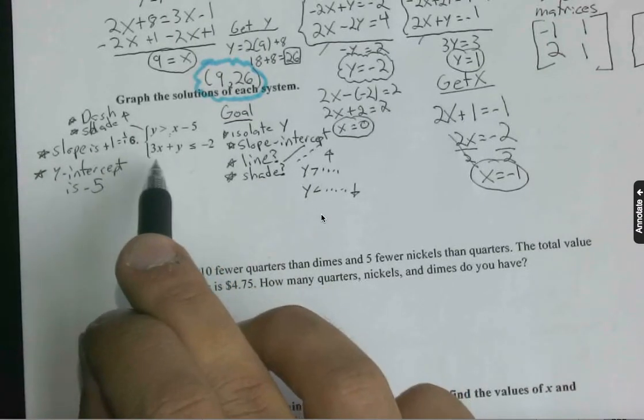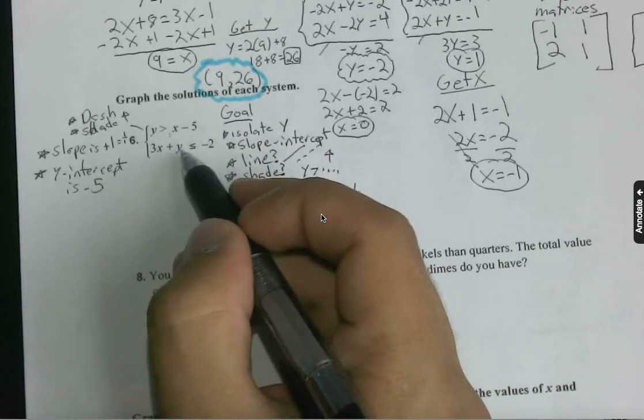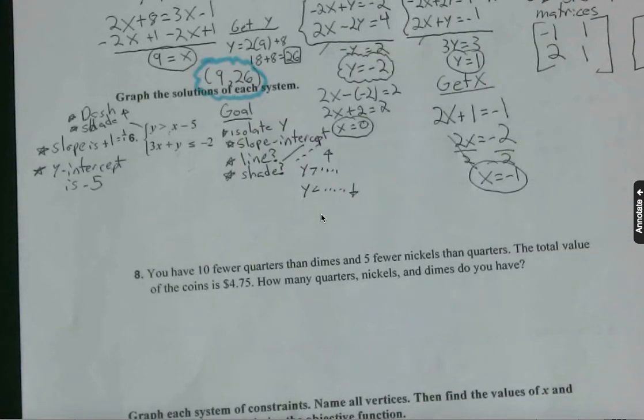For the second equation, however, we need to do a little bit of work to isolate y. So how can we isolate y for this second equation? We only need one step, but what's that step?